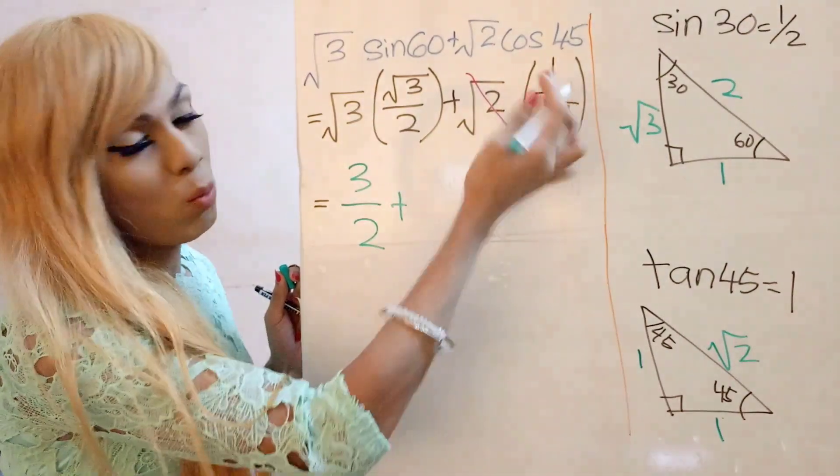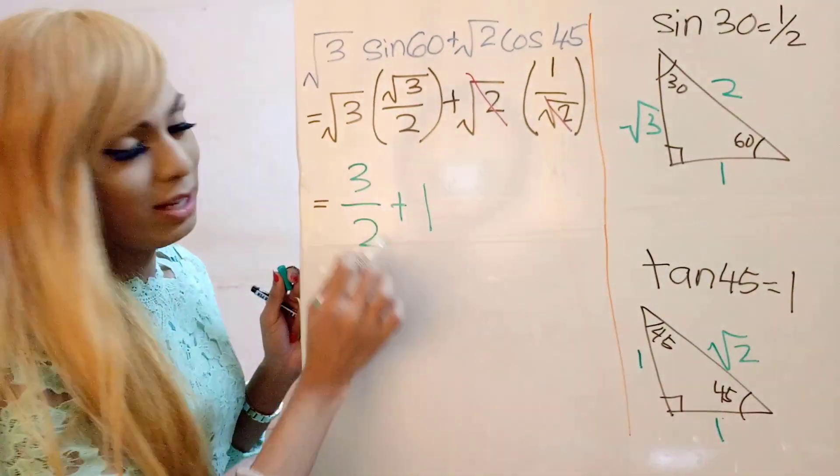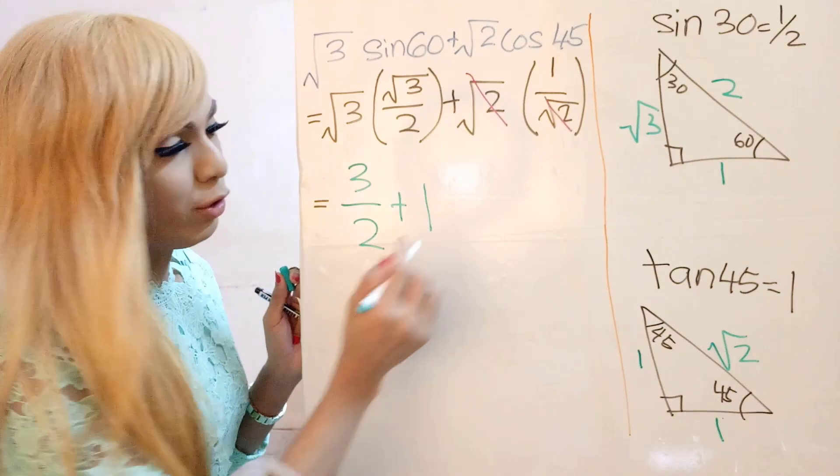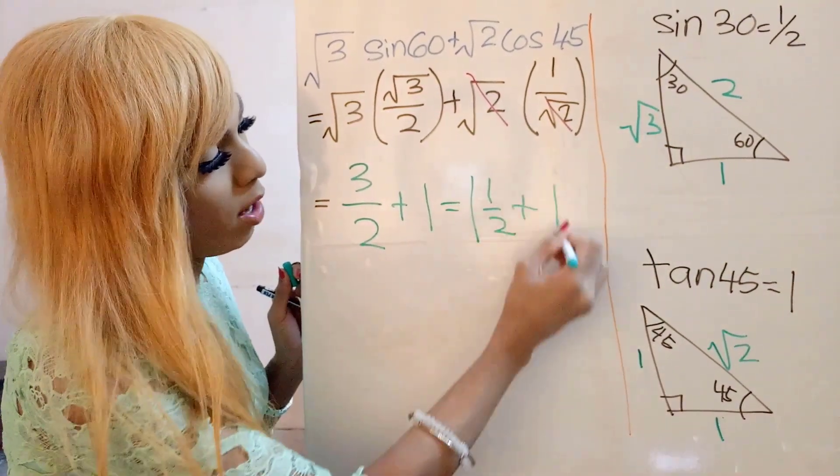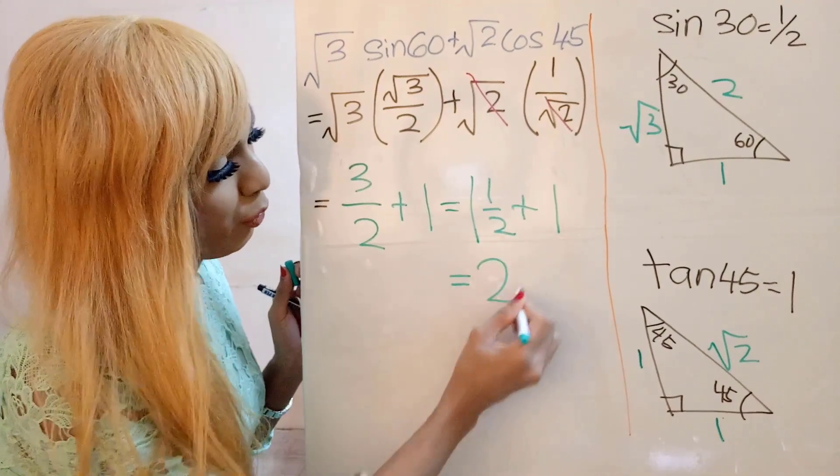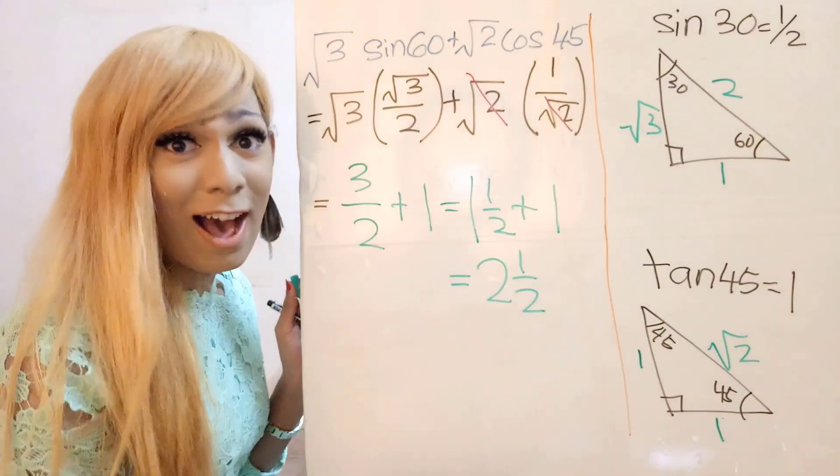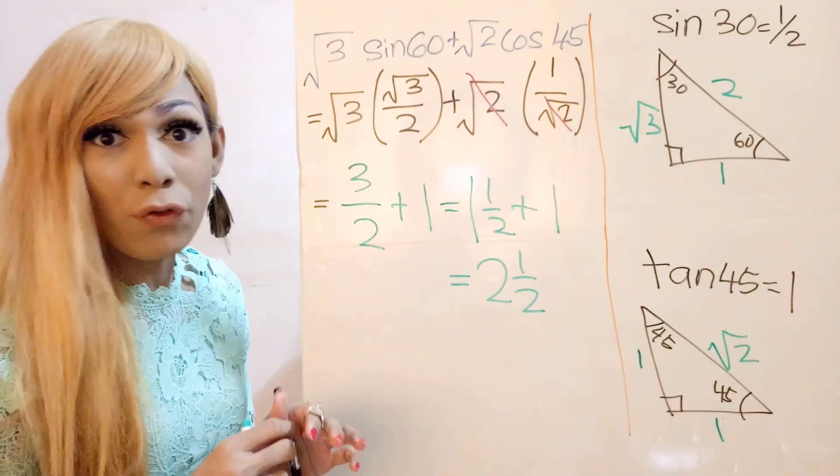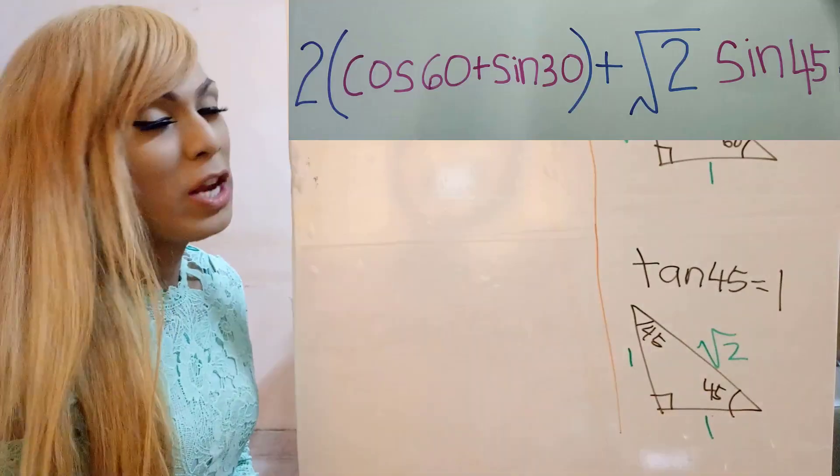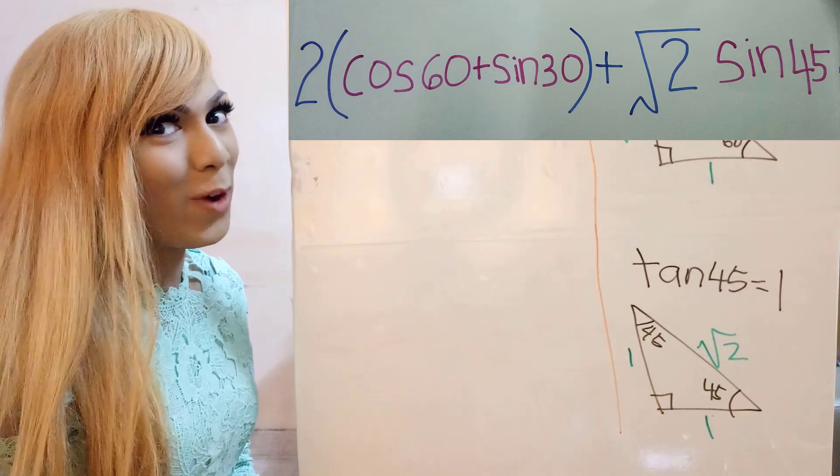But for this, we already know square root 3 times square root 3, it's going to be 3 over 2. Plus this one, 1. So this is 1 and a half. 3 over 2 is 1 and a half. Plus 1. So we're going to get 2 and a half. So that's the answer. So for question number 3, let's try one more question.